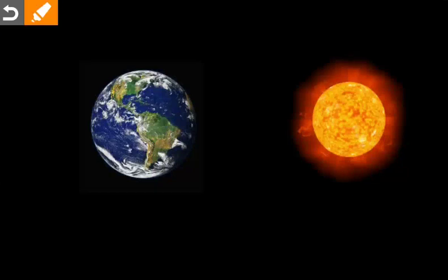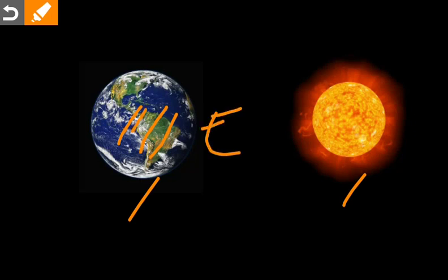Here you can see the Earth and the Sun. This part of the Earth is receiving the rays of the Sun, so it is in the east direction, and this part of the Earth is not receiving the rays of the Sun, so it is in the west direction.